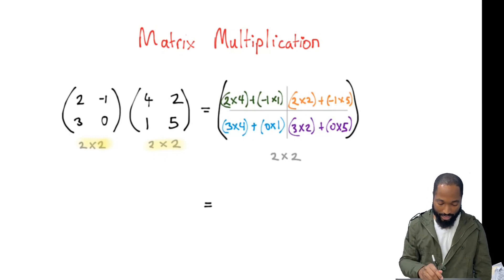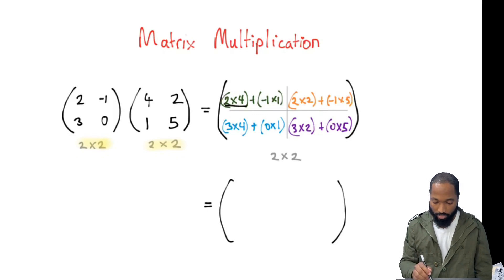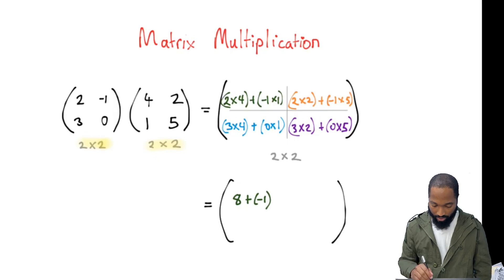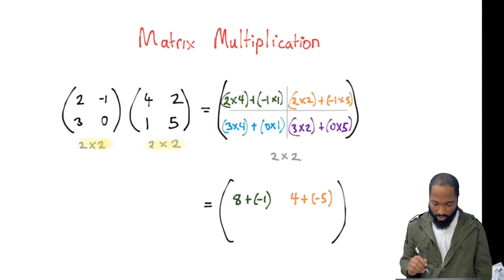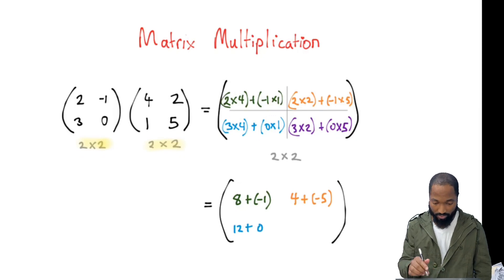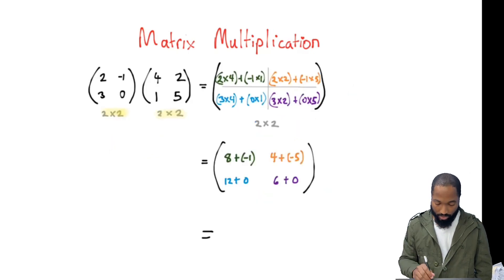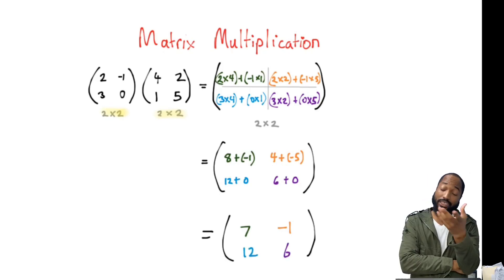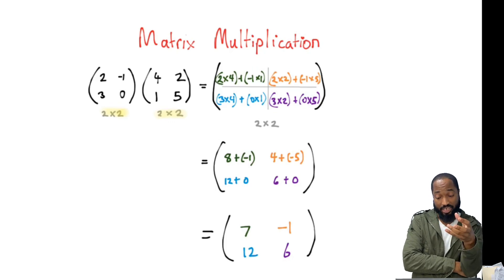Let's boil this down into numbers. 2 times 4 plus negative 1 times 1 gives us 8 plus negative 1. Over here we'll get 4 plus negative 5 — put negative numbers in brackets so we don't do anything ridiculous. Then 12 plus 0, and 6 plus another 0. So in the end, we finish with 7, negative 1, 12, and 6. Hard, easy — can you understand it, can you grasp it? Let me know.